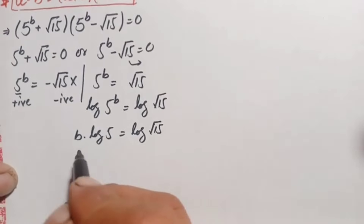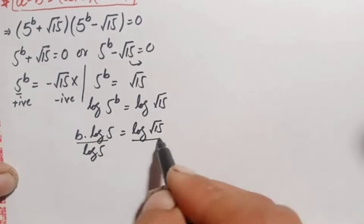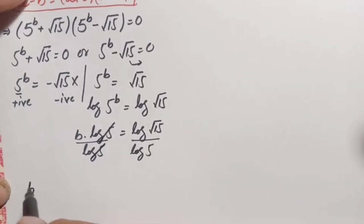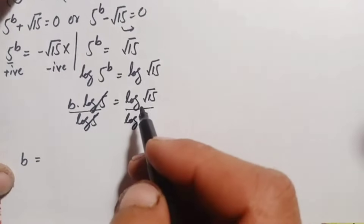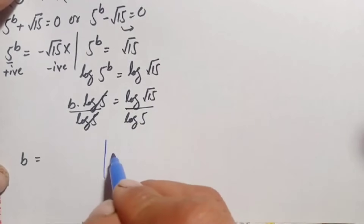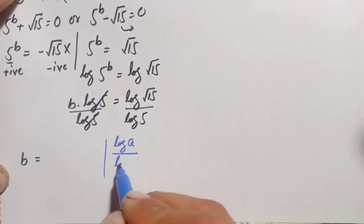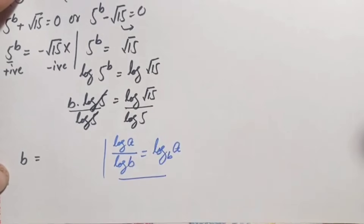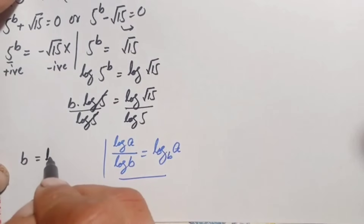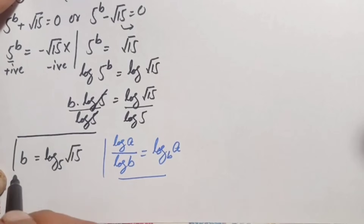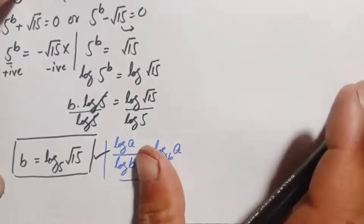We divide both sides by log of 5. On the left hand side, log of 5 cancels, leaving only b. On the right hand side, we use the change of base logarithm identity: log of a divided by log of b equals log of a with base b. Therefore, b equals log of square root of 15 with base 5. This is our answer.